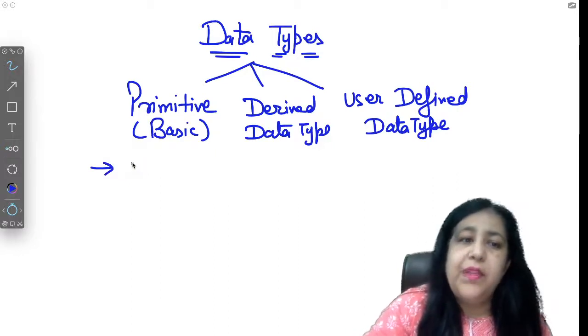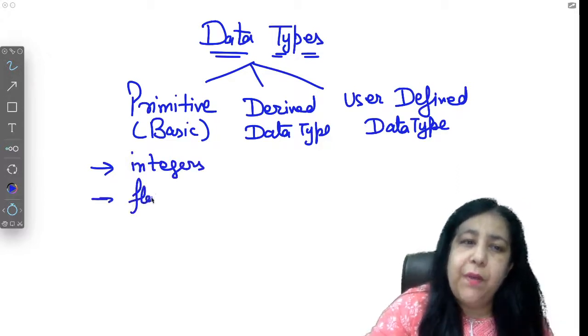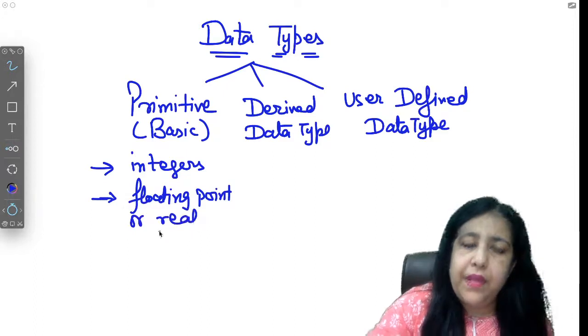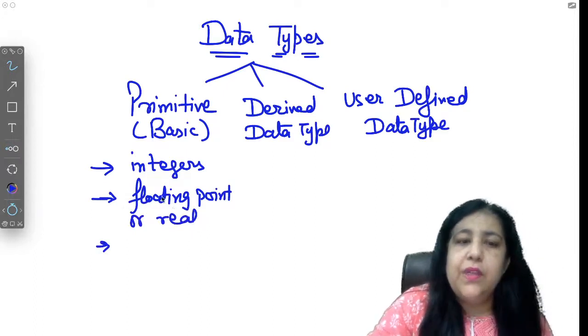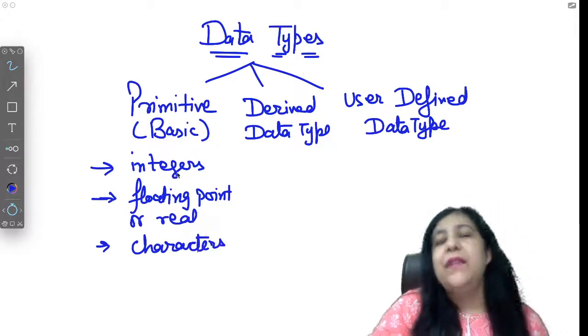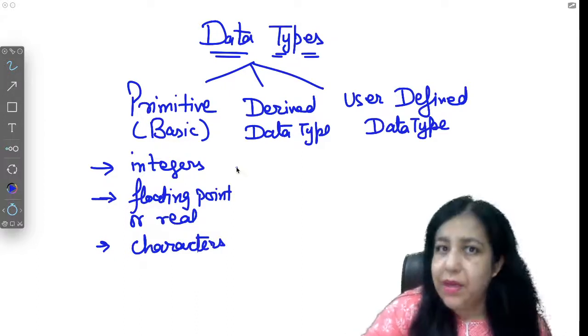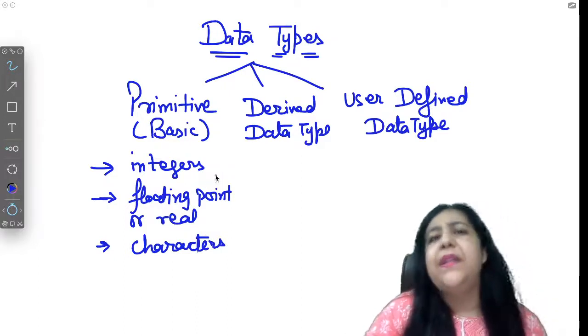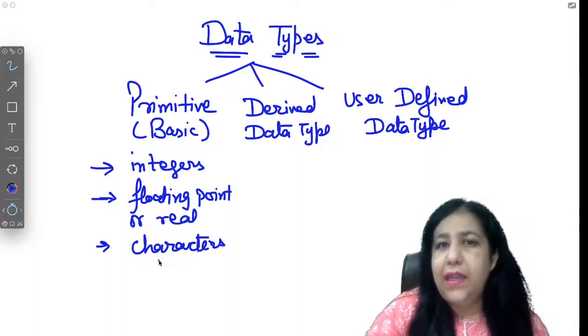In primitive data type, what options do you have? In primitive, I can have integers, I can have floating point numbers which we also call real numbers, and you have characters. In C language, specifically we have only these three primitive data types.